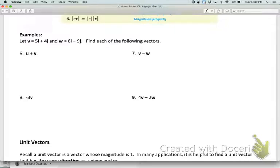For example 6, we want to add v plus w. That should say v plus w, because there is no u. If I want to add those, v plus w is going to be equal to, I just need to take 5 plus 6 for the i's and I get 11 times the unit vector i. And then 4 plus -9 gives me -5 for j. That's it. It really is that simple.